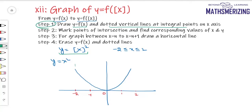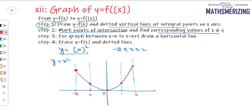I'll draw vertical lines at x = -2, -1, 0, 1, and 2. The second step is to mark the points of intersection and find corresponding values of x and y. So I'll mark these intersection points. When x = -2, y = 4; when x = -1, y = 1; and at x = 0, y = 0.